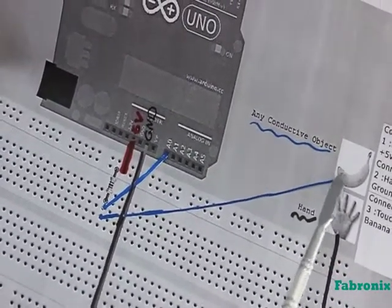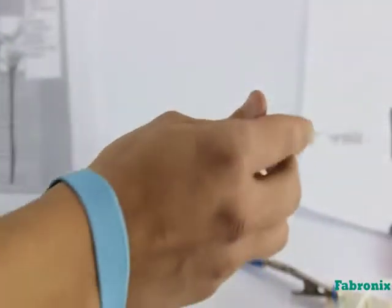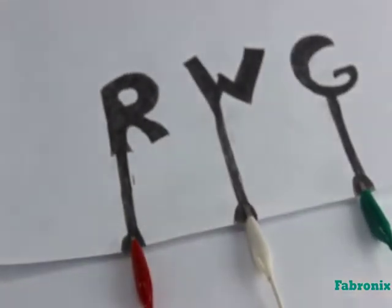The second terminal is connected to an analog to digital converter pin on the Arduino. Also, it is connected to a conductive object.